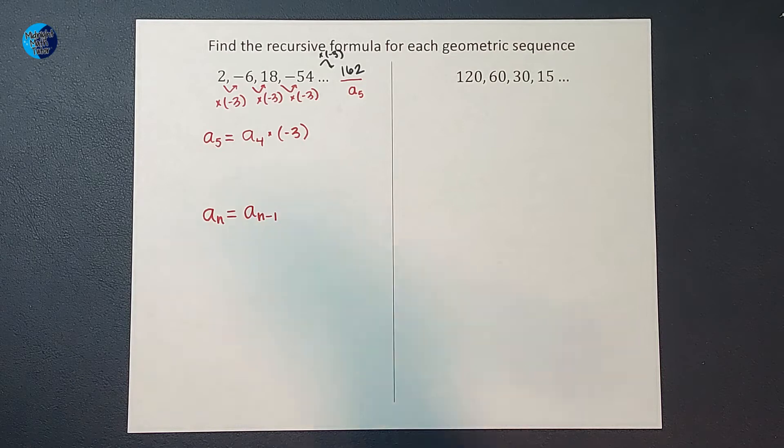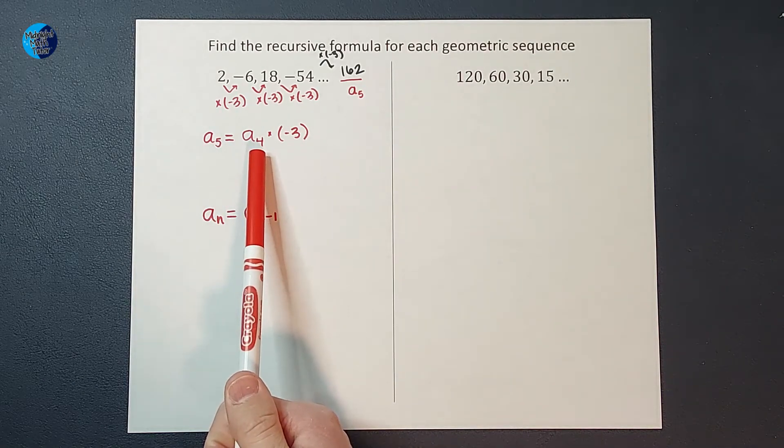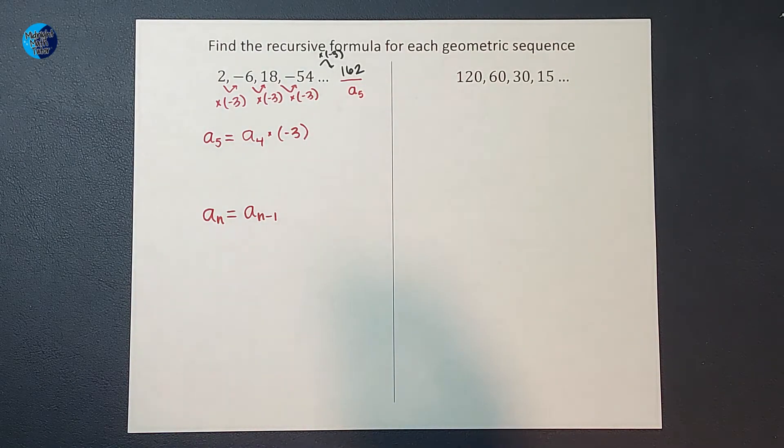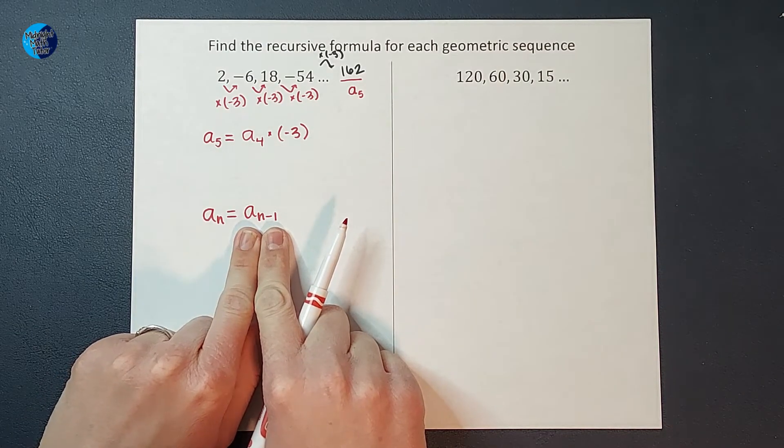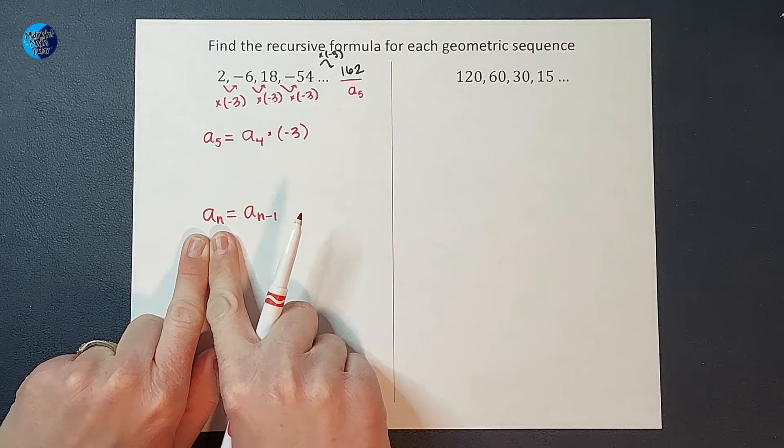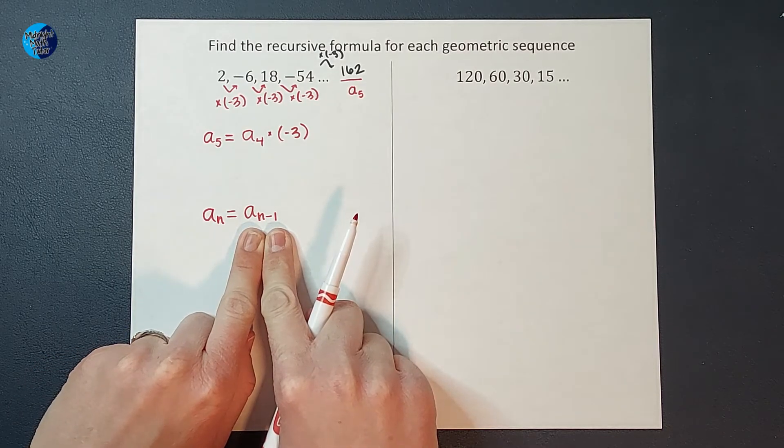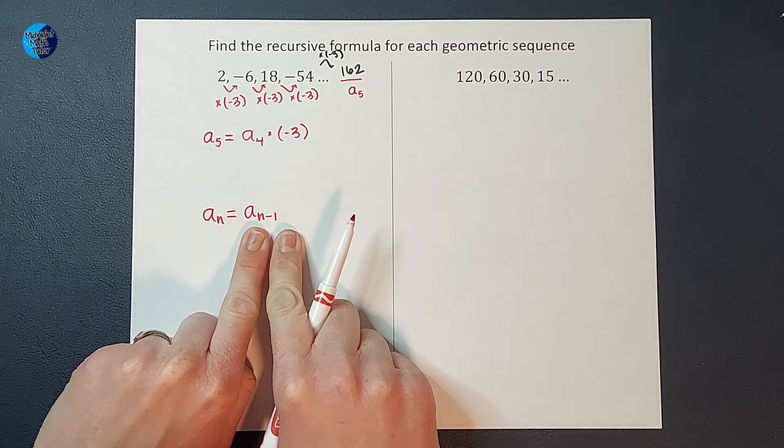I say A sub n minus 1. What? Okay, isn't 4, 5 minus 1? Yes. So this means take the one before it. If you want to find the 10th term, take the one before it, the 9th term, 10 minus 1. All right.